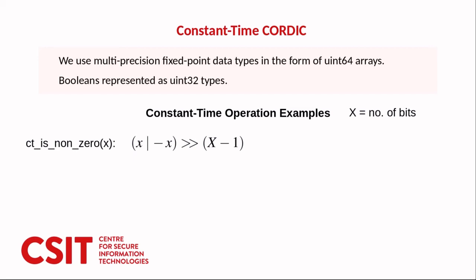For example we have the constant time is non-zero and this tests whether x is not zero. If it is not zero the answer is one and it does this by using the fact that the two's complement of a value can only differ in the most significant bit from the original value unless that value is zero.